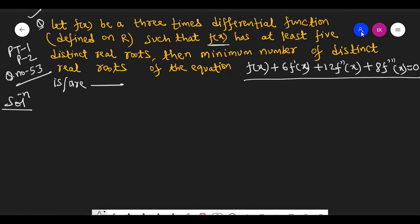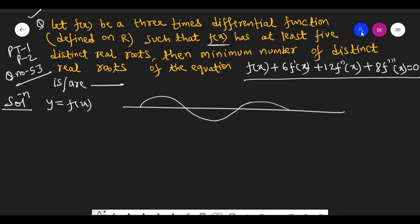How many of you can tell this equation? First of all, the rule is the Mean Value Theorem. Think about y equals f(x). f(x) has 5 roots, so f(x) will roughly look like this: 1, 2, 3, 4, 5. The rule is the Mean Value Theorem applied over an interval.